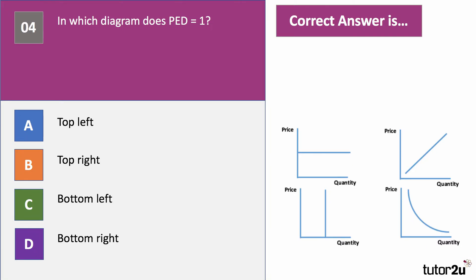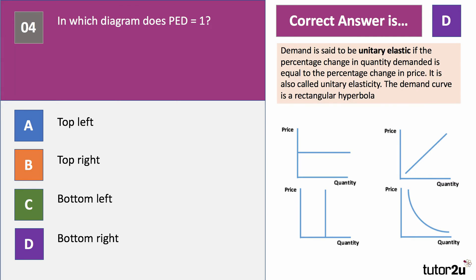Question four: in which diagram does the coefficient of elasticity of demand equal one? Is it top left, top right, bottom left, or bottom right? A lot of people might have chosen top right, but that's actually a supply curve. The right answer is D — a rectangular hyperbola. Demand is said to be unitary elastic with a coefficient of one when the percentage change in quantity demanded equals the percentage change in price. Total revenue at each price and quantity will stay the same.